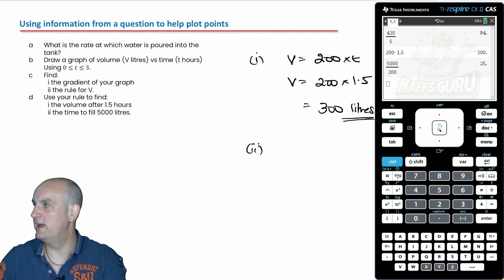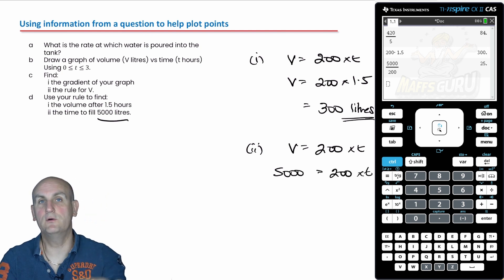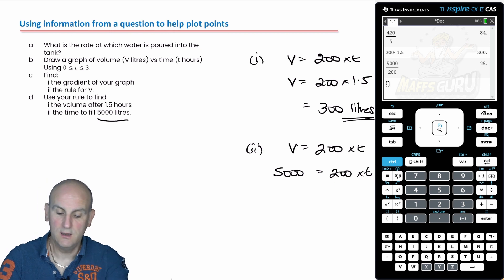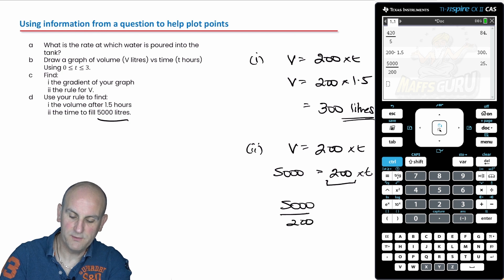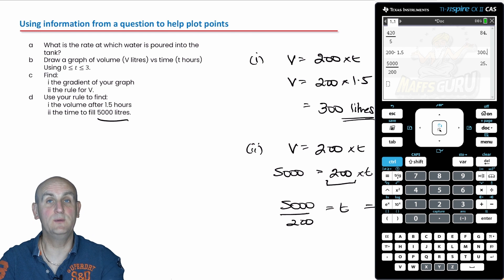In part 2, they turn it on our head. What do they say? They say find the time to fill 5,000 litres. They've given me a volume. So I'm going to write down my equation. I always write down my equation first. Then I substitute. So V is 5,000 equals 200 times T. And again, if your algebra is good, I'm going to divide both sides by 200 to give me 5,000 divided by 200 equals T. And again, on my calculator, I've already worked that out to be 25. And don't forget your units because we're dealing with time. 25 hours.